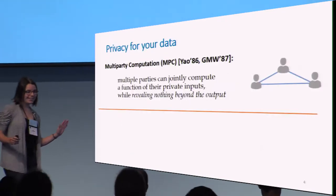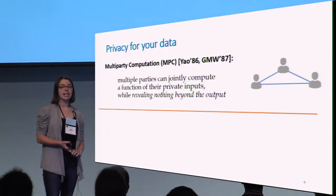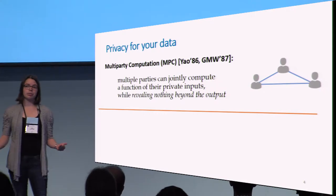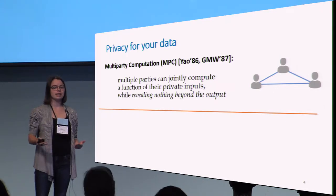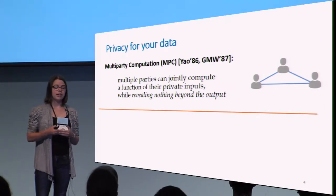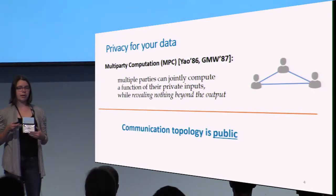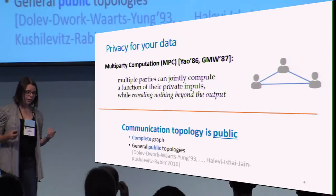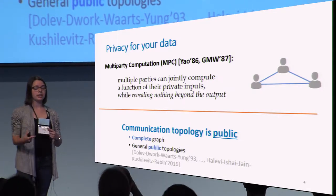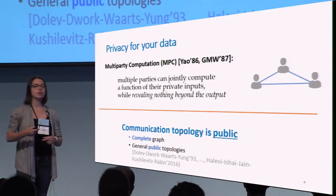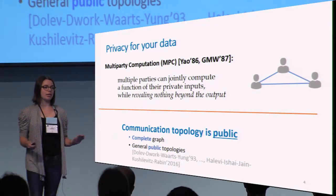Now you might be thinking, wait, we already have something that does this. We get privacy for your data with multi-party computations, invented in the eighties. The setting is you have multiple parties, each with their own private inputs, who jointly want to compute a function without revealing anything beyond the output of that function. However, the setting for MPC has the communication topology being public, meaning you're either dealing with a complete graph where every party can talk to every other party, or if you have an incomplete communication graph, it's public and everyone knows who's talking to whom. So MPC does nothing to hide any of the metadata of the computation.